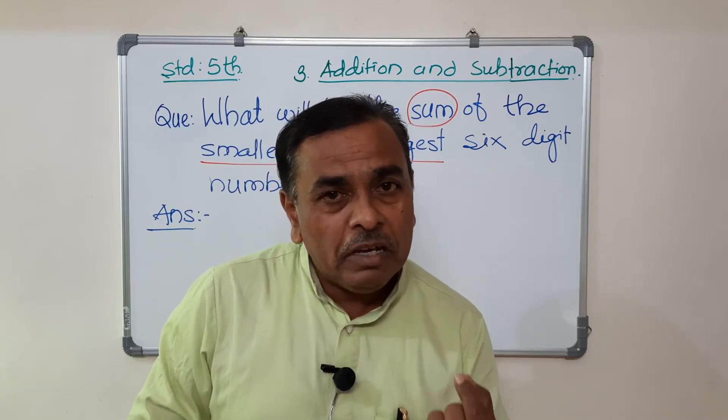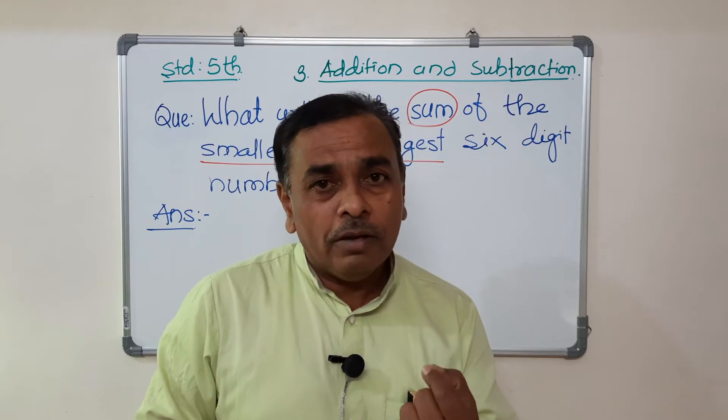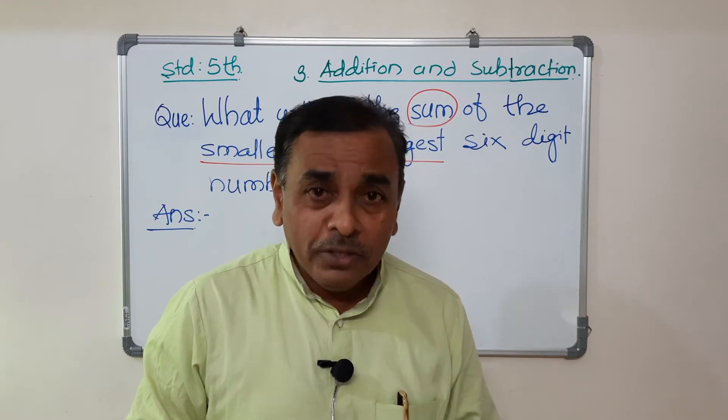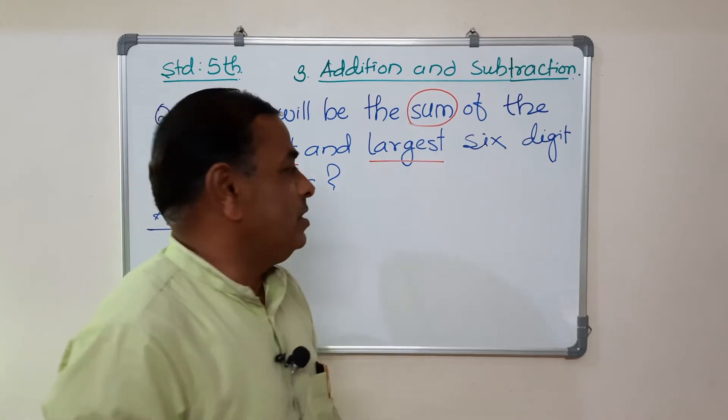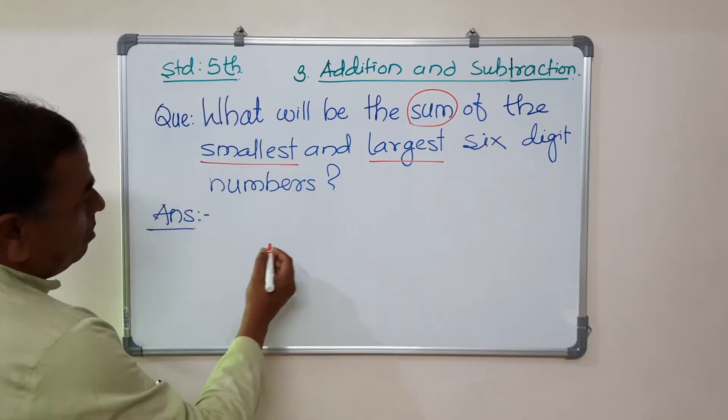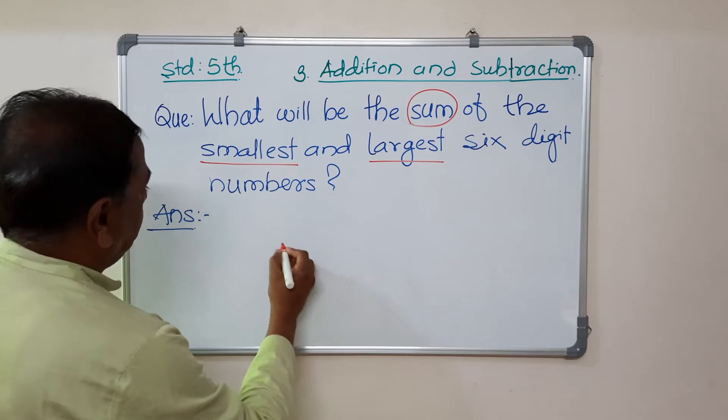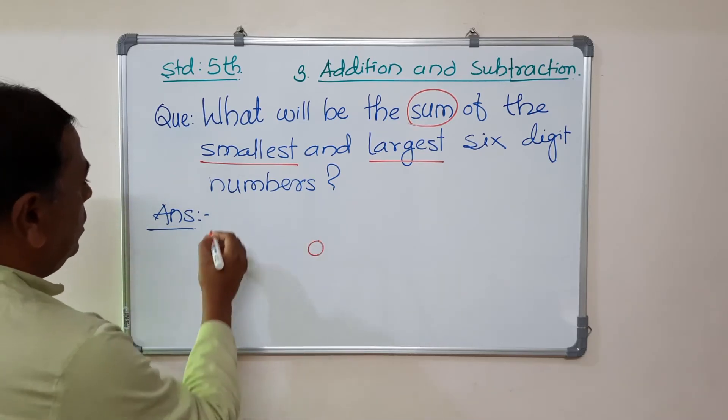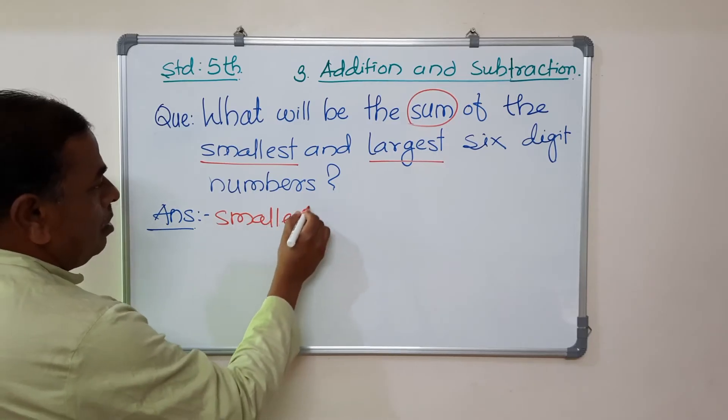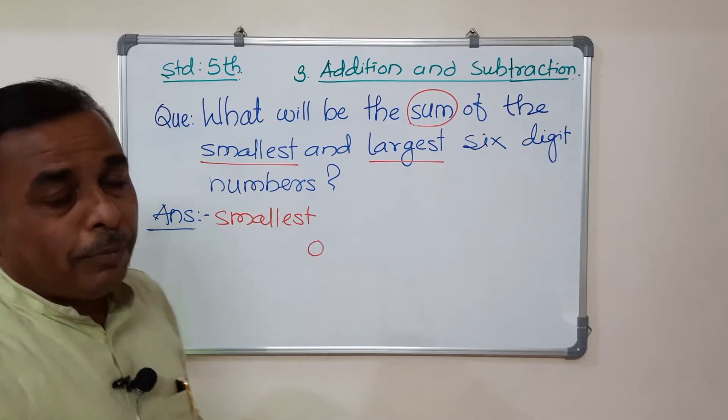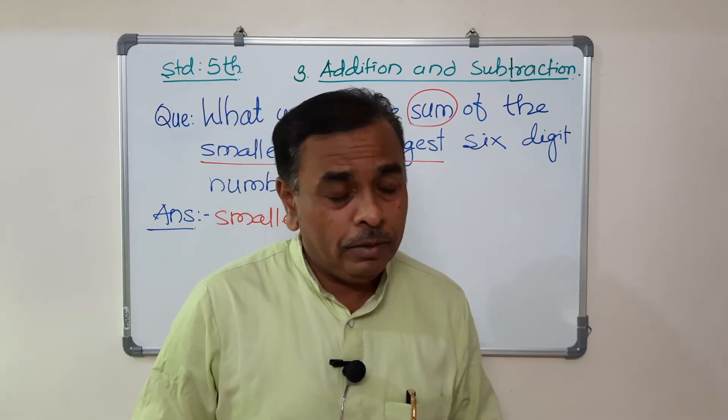Smallest single digit, what is the smallest number? Which one? Zero. Yes, zero is the smallest number. Smallest, smallest six digit number.